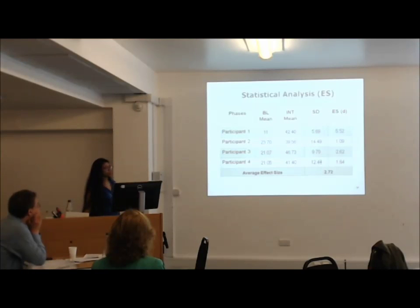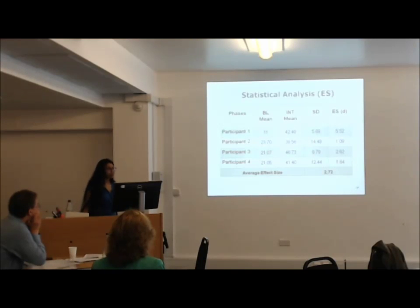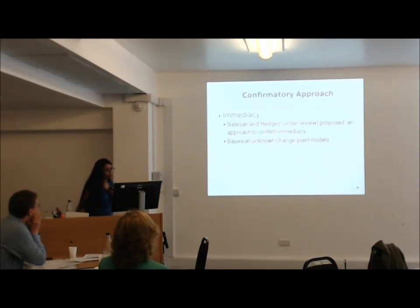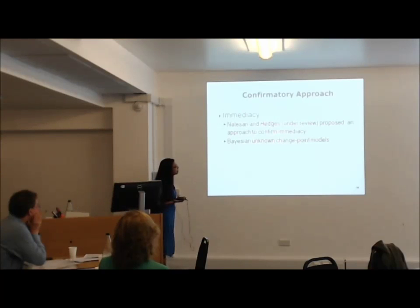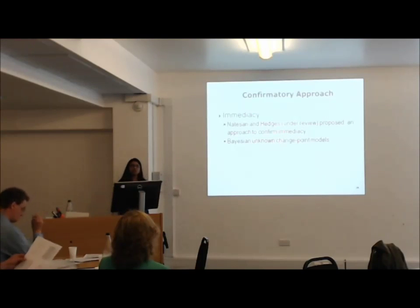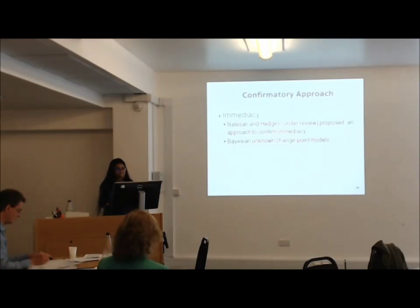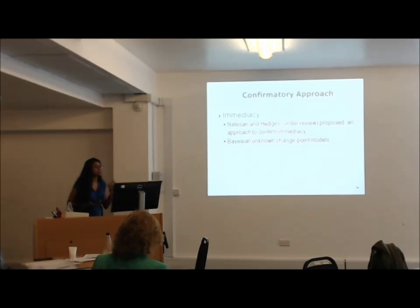If you got those effect sizes in a randomized controlled trial, that would be amazing — but it's not valid here, because in single case designs the within-group standard deviation and autocorrelation really hinder the computation of effect sizes and make interpretation very difficult. So I came up with another approach — a confirmatory Bayesian approach to look at how to confirm immediacy of effect. It can handle small sample data, autocorrelations, and any type of data distribution.